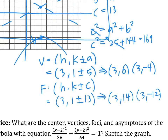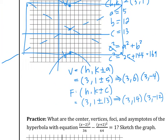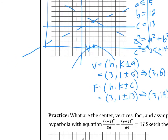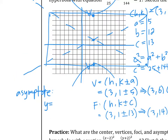Last one — this is the tricky one: asymptotes. What is the slope? Is it a over b or b over a? It's a over b, so plus or minus 5 over 12. There is an h and k involved, so the asymptote equation is y equals plus or minus (5/12)(x minus 3) plus 1.